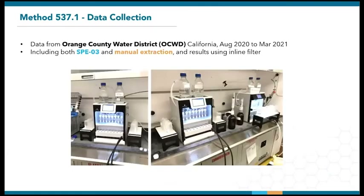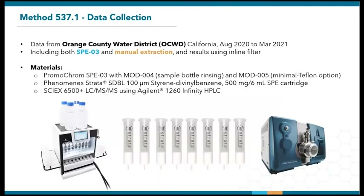Moving on to Method 537.1, I would like to thank the Orange County Water District for sharing their data. Their lab employs some of the best practices, such as tracking the average QC data over time. We are able to look at the LFBs and LRBs across 19 extraction batches on the SPE03 and vacuum manifold. Their SPE03 was also configured with Mod004 sample bottle rinsing feature and Mod005 minimal Teflon option. All extractions were performed using Phenomenex SDBL cartridges with SDBB packing material. A SCIEX 6500+ triple-quad and Agilent 1290 Infinity HPLC was used for analysis.